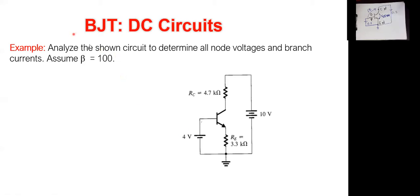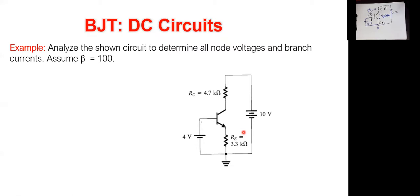Now let's solve three examples dealing with the BJT under DC bias. Example 1: Analyze the shown circuit to determine all node voltages and branch currents, assuming β = 100. We have 4V applied to the base, a 3.3 kΩ resistor connected to the emitter, a 4.7 kΩ resistor connected to the collector (RC), and 10V applied to the collector supply. From the first impression, the high collector voltage suggests active mode operation.